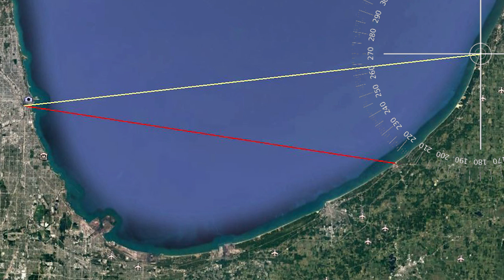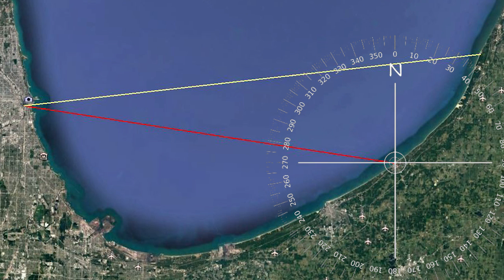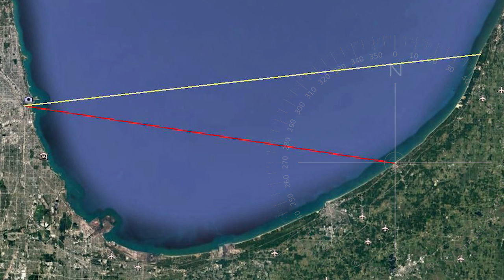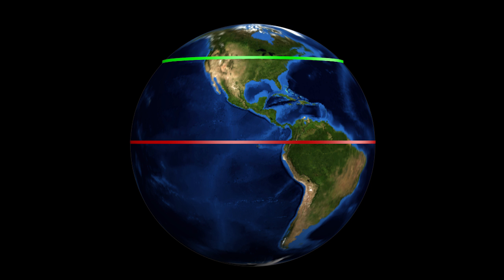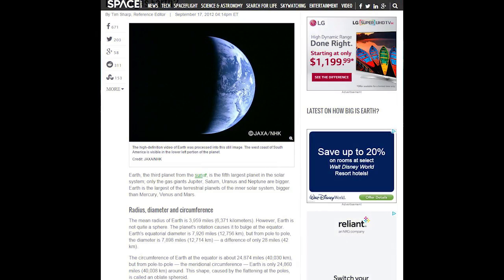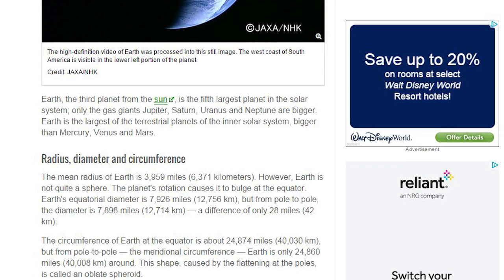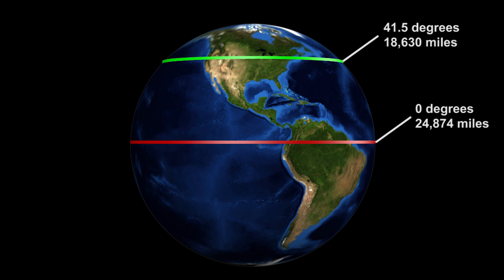Going back to the Lake Michigan Chicago trip, Joshua Nowicki was looking at about 260 degrees to the west, and we were further south looking on a heading of roughly 277 degrees. If you zoom out of the earth and put markers for the equator and the latitude we were at — the ball earth math everybody's using is based on the circumference of the earth, 24,874 miles, from which we derive the diameter and the radius. But we were at latitude 41.5 degrees, where the circumference is only 18,630 miles, looking 277 degrees to the west, almost exactly due west, which means the curvature math is quite a bit different.